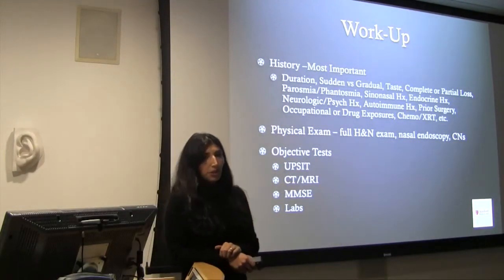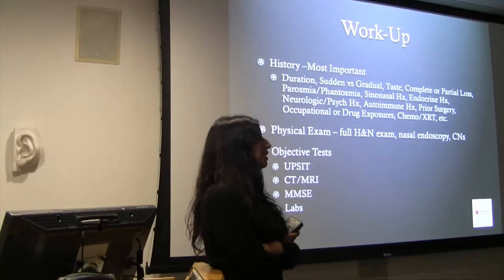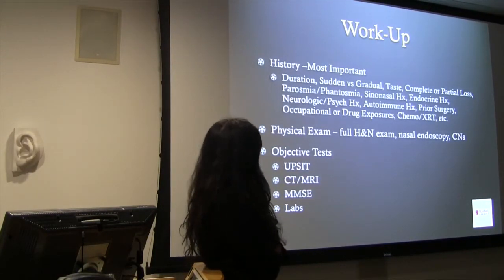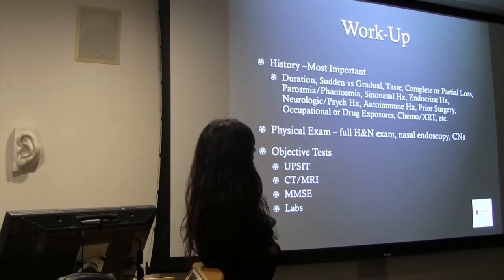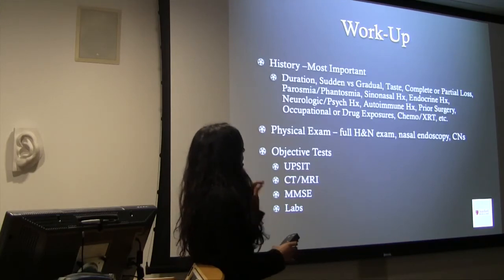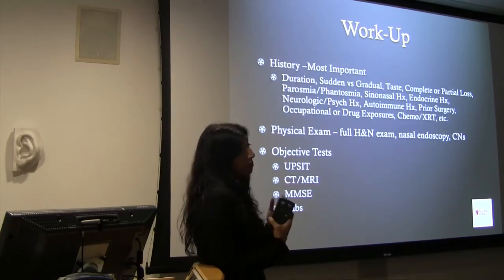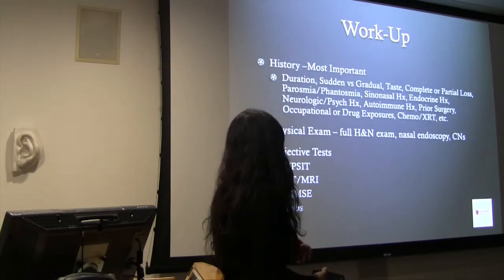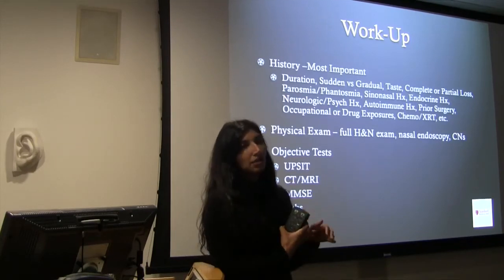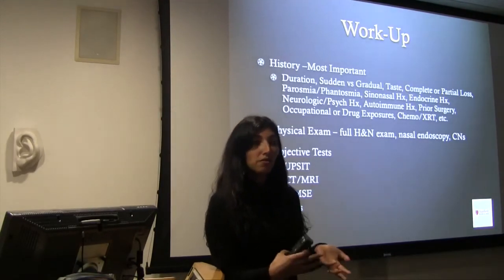When doing a workup for olfactory loss, the highlights include: duration, whether onset was sudden or gradual, whether taste is intact, whether loss is complete or partial, and other history symptoms — sinonasal, endocrine, autoimmune, prior surgery, occupational exposures, new medications, and prior chemo or radiation. You also want to do a full head and neck exam, nasal endoscopy, and a cranial nerve exam, because something that affects cranial nerve one could also affect other cranial nerves.